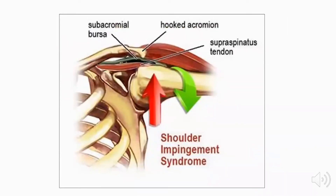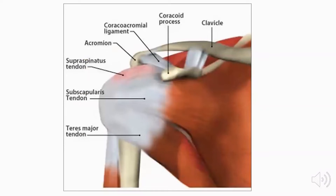This is especially common with abduction combined with internal rotation, leading to three basic conditions of the rotator cuff: subacromial impingement, rotator cuff tears, and calcific tendonitis. When the rotator cuff becomes entrapped under the coracoacromial arch, inflammation occurs in the tendon, which can progress later to a rotator cuff tear.